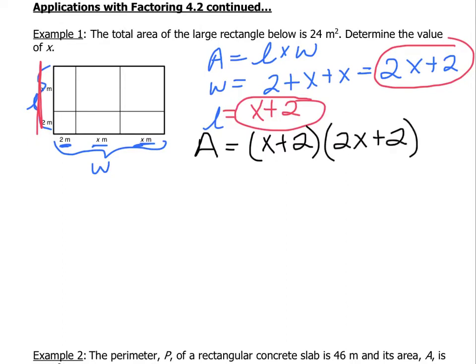Now you can see that you've got two binomials. And what we're going to do is we're going to multiply them together. Let's multiply these two together and see what we end up with. We get 2x squared plus 2x plus 4x plus 4. And we can simplify that to 2x squared plus 6x plus 4.